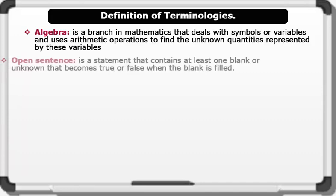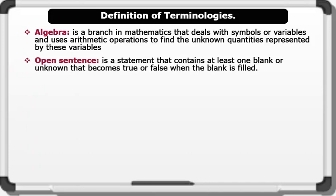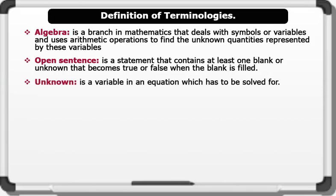Open Sentence is a statement that contains at least one blank or unknown that becomes true or false when the blank is filled. The unknown is a variable in an equation which has to be solved for.